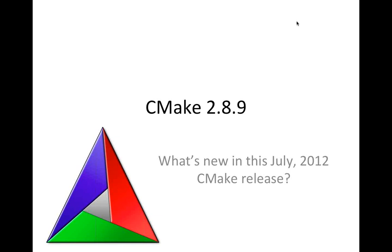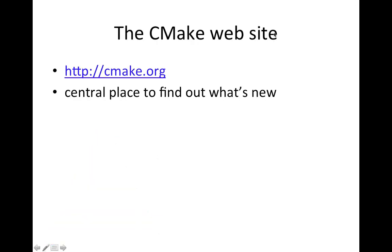It'll be a little bit shorter than last time because there's a little bit less to talk about. If you want to find out what's new in general about CMake anytime, just visit our website at cmake.org. The other primary source of information is to join the mailing list or look at the mailing list archives. There are links on the website to sign up if you're not already part of it.